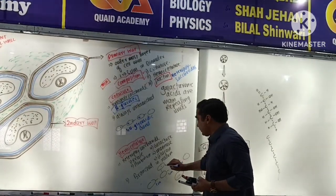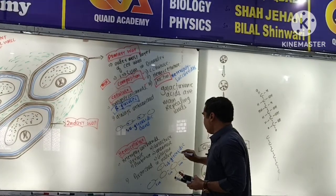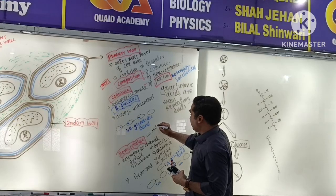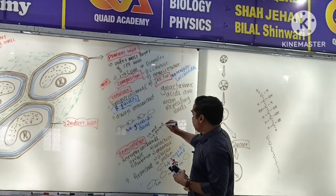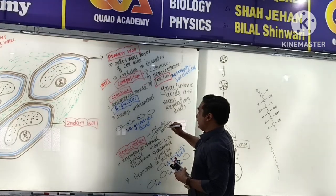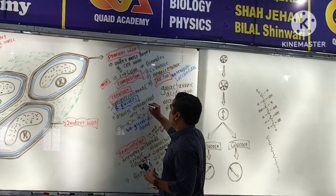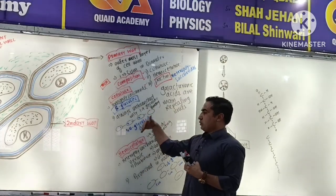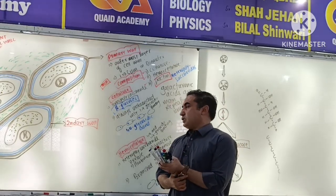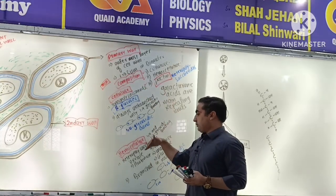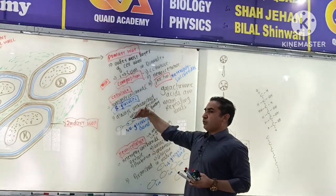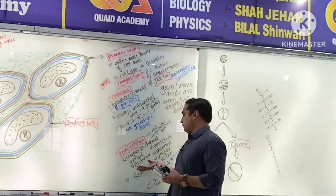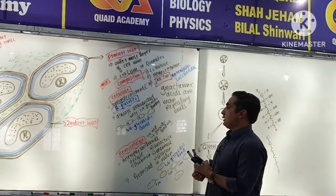For branching, there are 1,6 glycosidic bonds. Hemicellulose has both 1,4 and 1,6 glycosidic bonding. The repeating units of cellulose are beta-glucose, while hemicellulose has repeating units of D-arabinose, xylose, galactose, mannose, glucose, and so on. So these are the full differences.